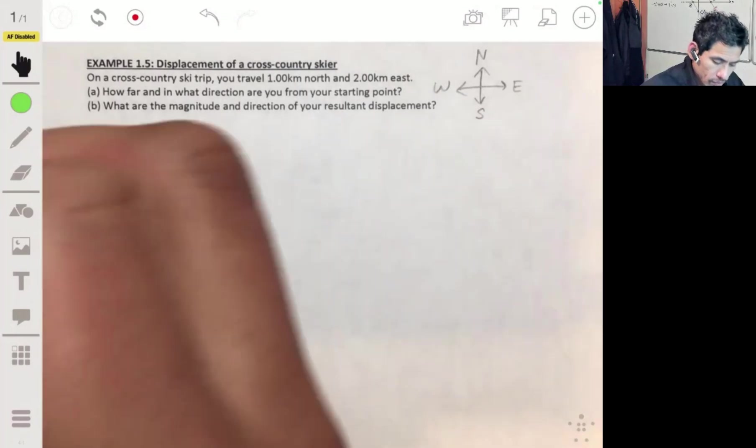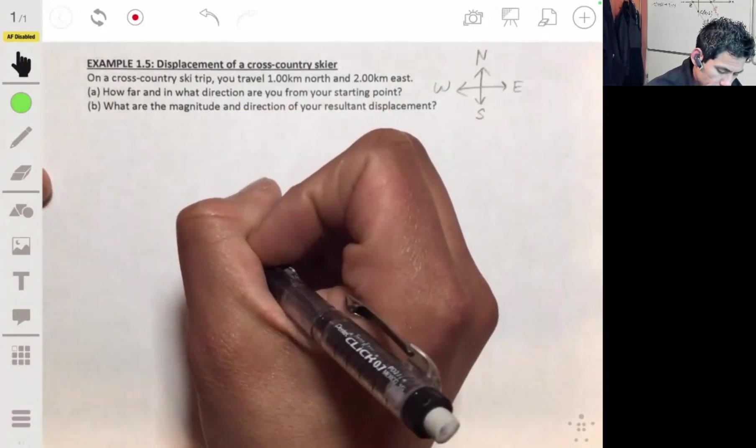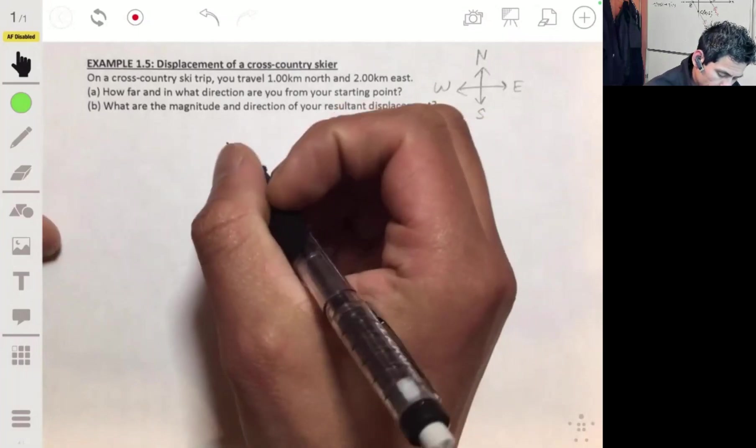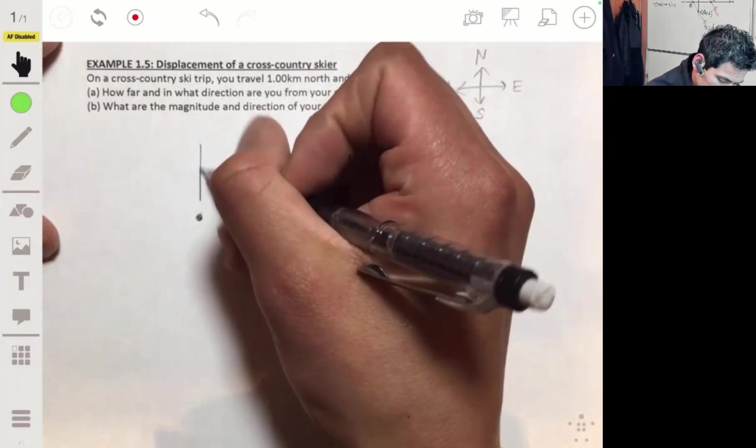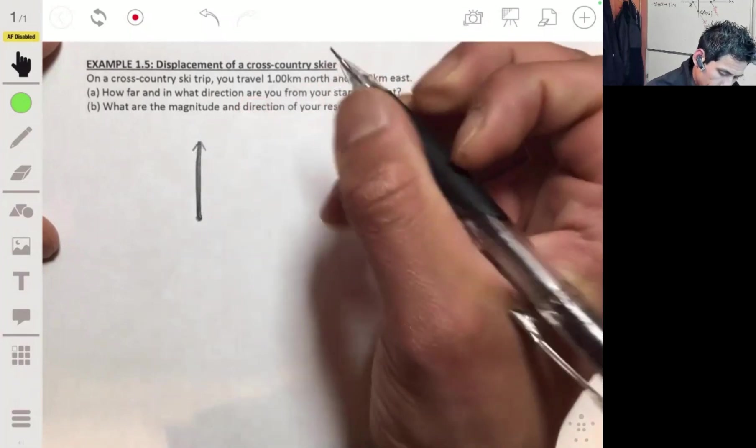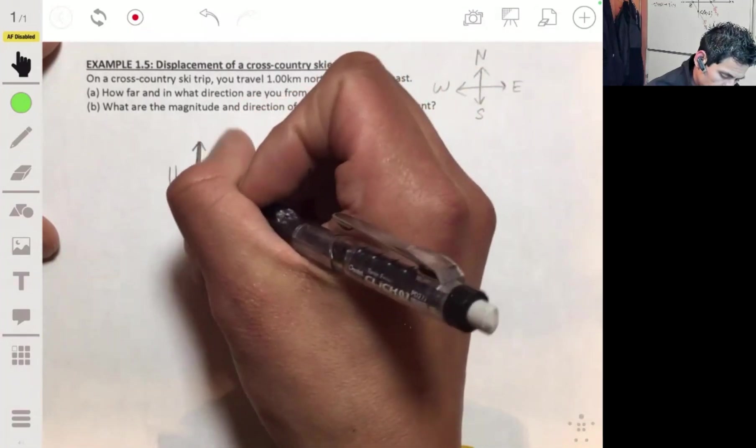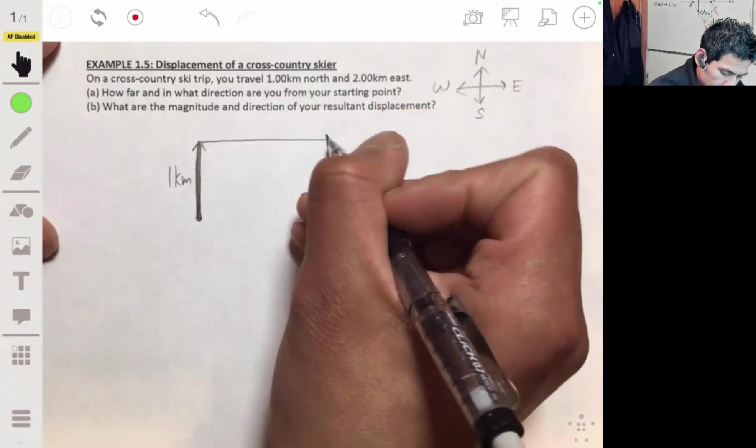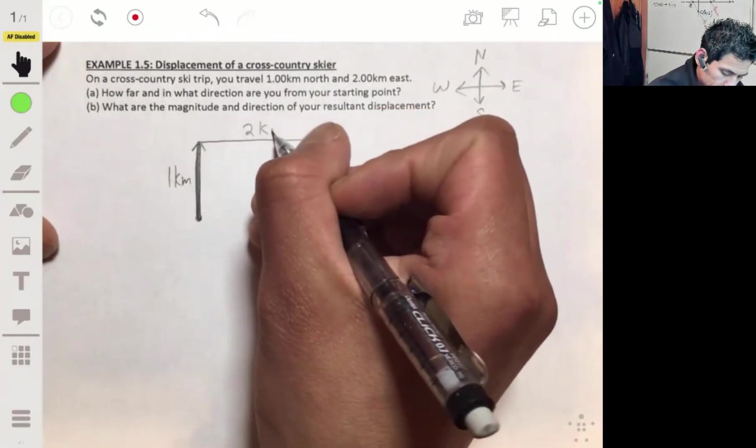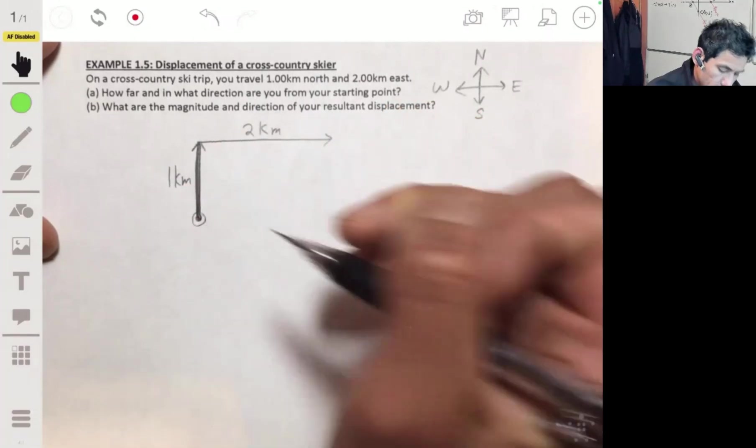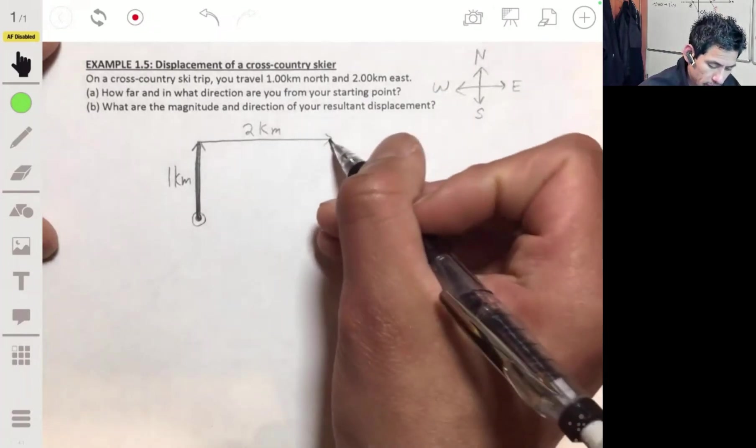And so then say we start here. So we go north, so let's draw a vector straight up, one kilometer. And then a vector to the right, two kilometers.